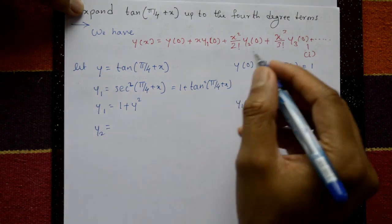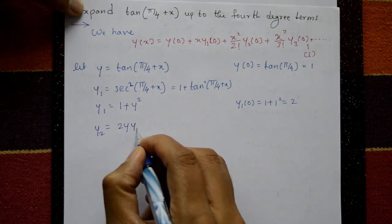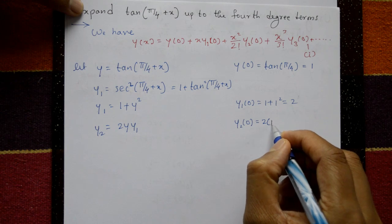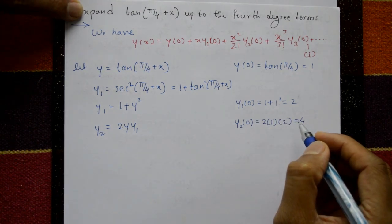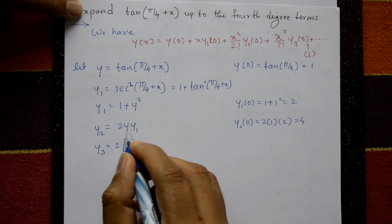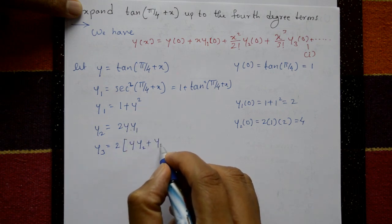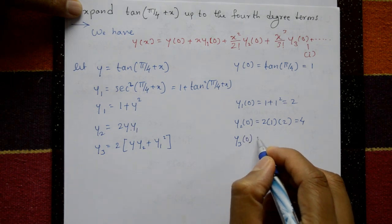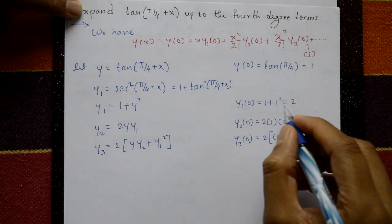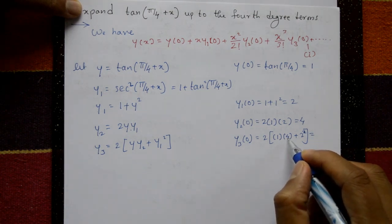Differentiate y1 = 1 + y² to get y2 = 2y·y1. Put x = 0: y2(0) = 2 × 1 × 2 = 4. Differentiate again using product rule: y3 = 2·[y·y2 + y1·y1] = 2·[y·y2 + y1²]. Put x = 0: y3(0) = 2·[1×4 + 2²] = 2·[4 + 4] = 16.